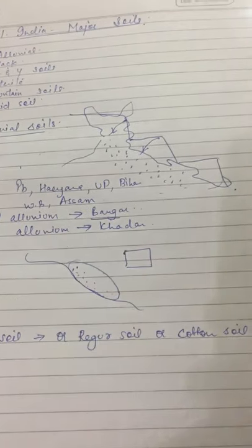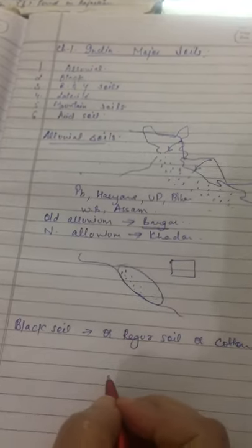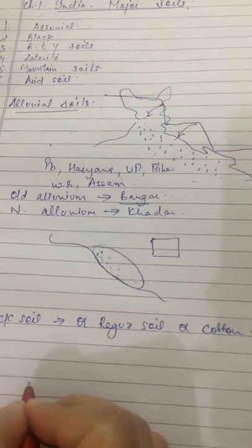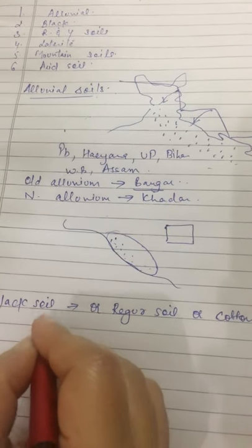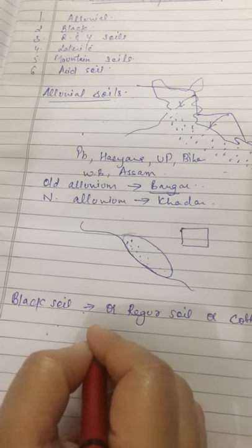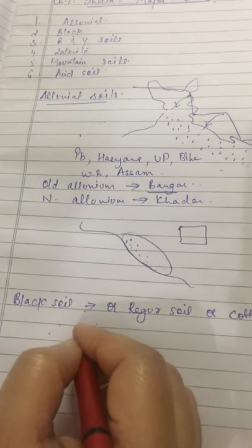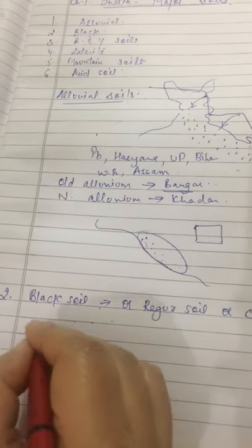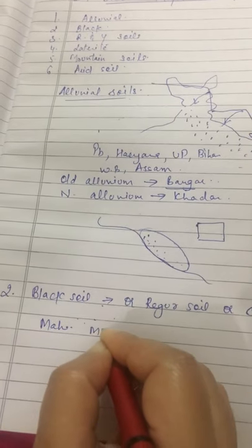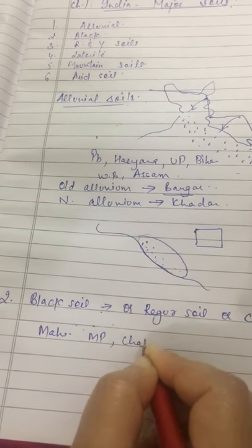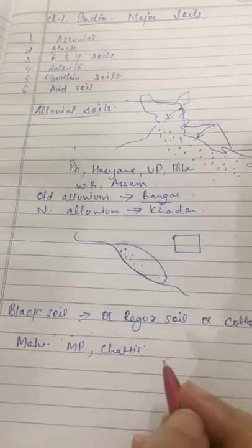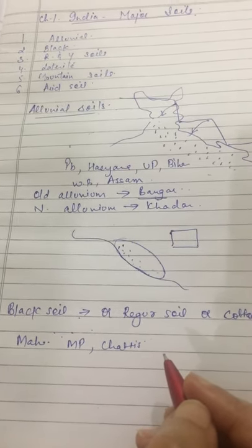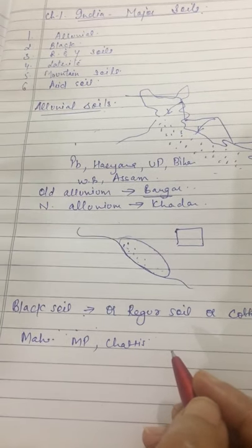Climatic conditions and parent rock material are the important factors for the formation of black soil. Black soil is found in India, in Maharashtra, Madhya Pradesh and Chhattisgarh.